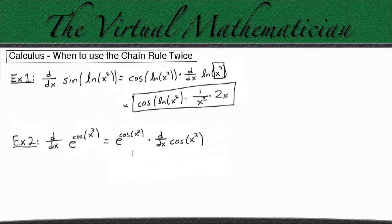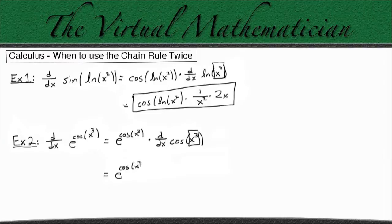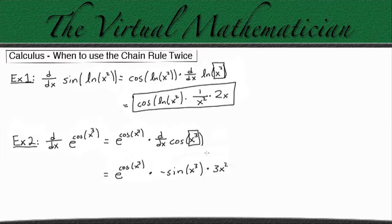This e to the cosine of x cubed is going to stay the same. When we're taking the derivative of cosine of x cubed, the chain rule says to take the derivative of our function times the derivative of the function inside, which is x cubed. So in the end we get e to the cosine of x cubed, times negative sine of x cubed, times the derivative of x cubed, which is 3x squared using the power rule. That's the final answer for example two.